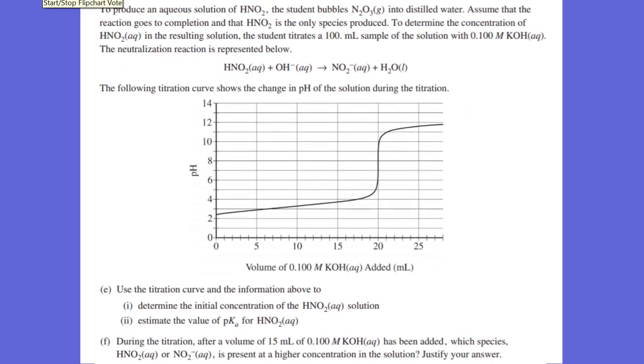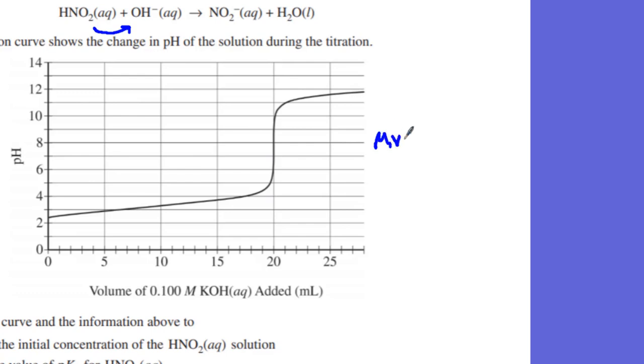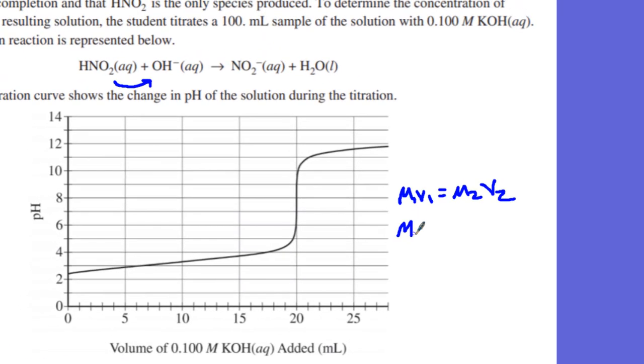Then we move into a titration slash equilibrium type problem. There are a lot of really good parts of this problem. It spans a lot of AP chemistry, and that's why I like this problem. In this titration curve, we have HNO2, a weak acid. That weak acid gives away the H+ and makes the OH- become water and NO2- the conjugate base. We want to determine the initial concentration of HNO2. We're going to use M1V1 equals M2V2 because we have a one-to-one ratio in everything. Remember, if it's not a one-to-one ratio, you have to do that molar ratio in between.